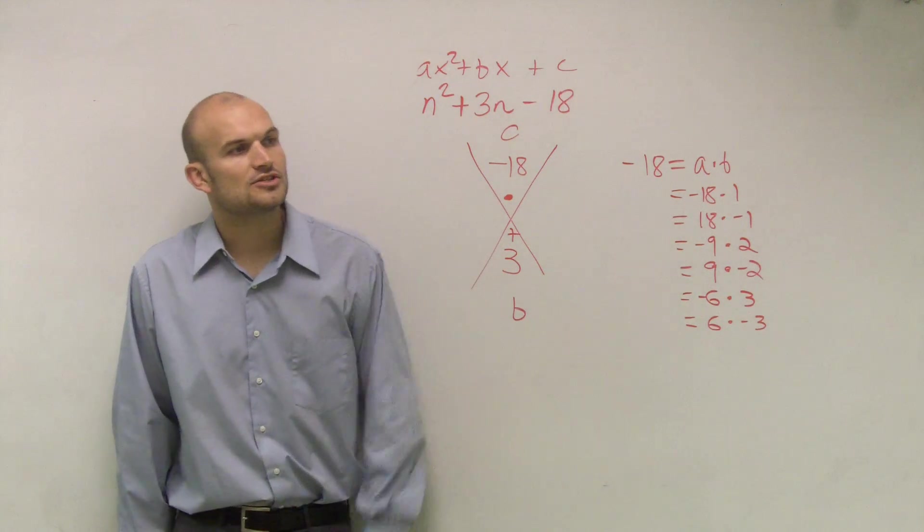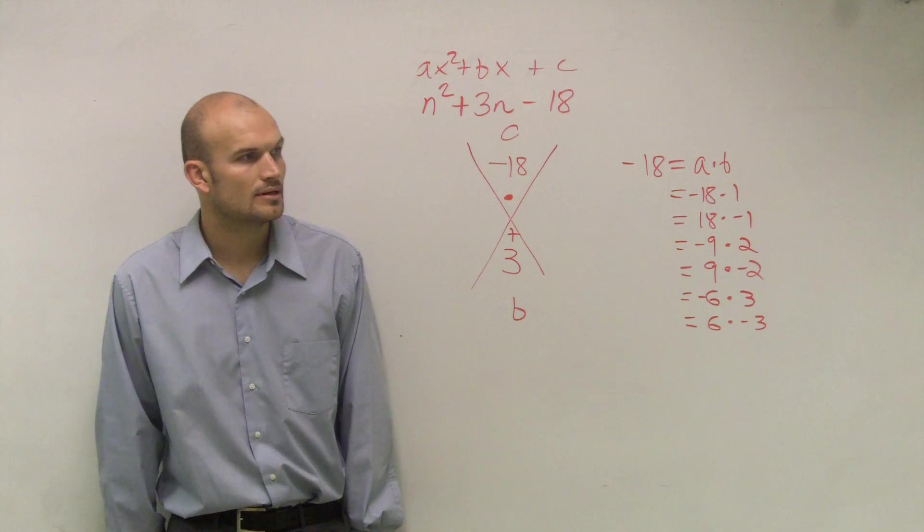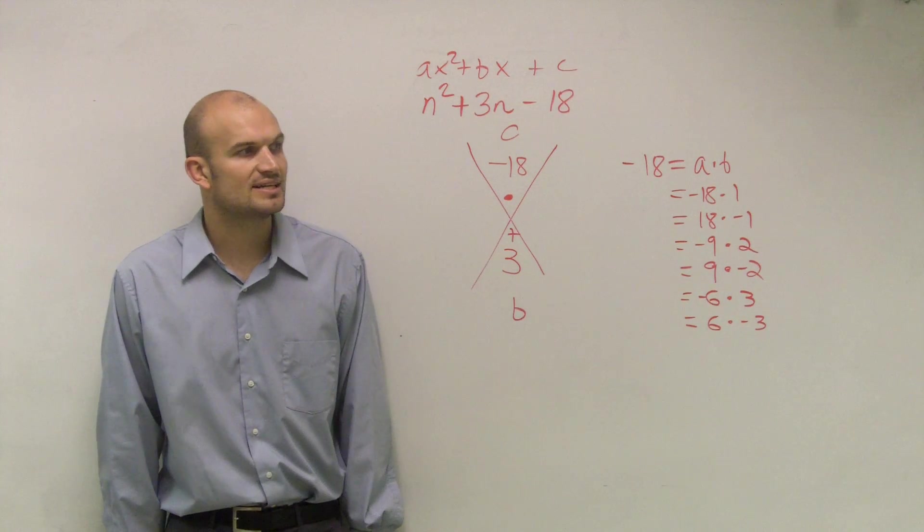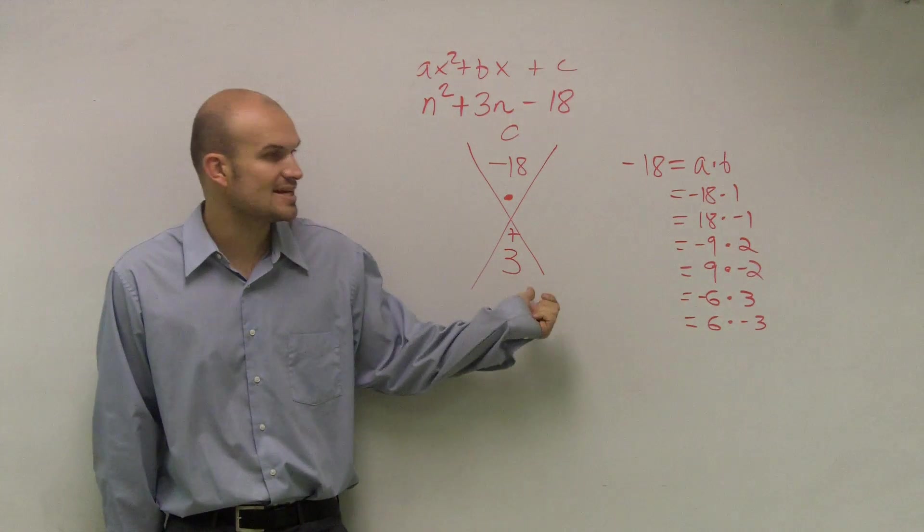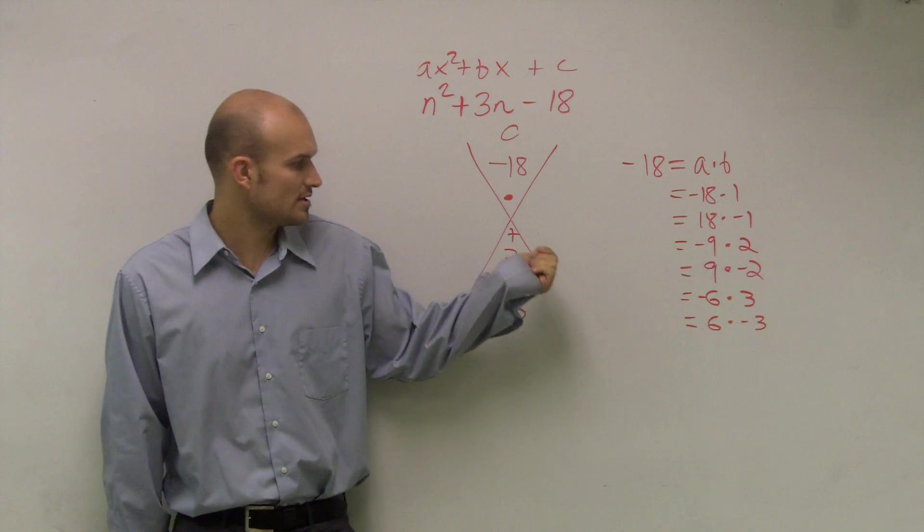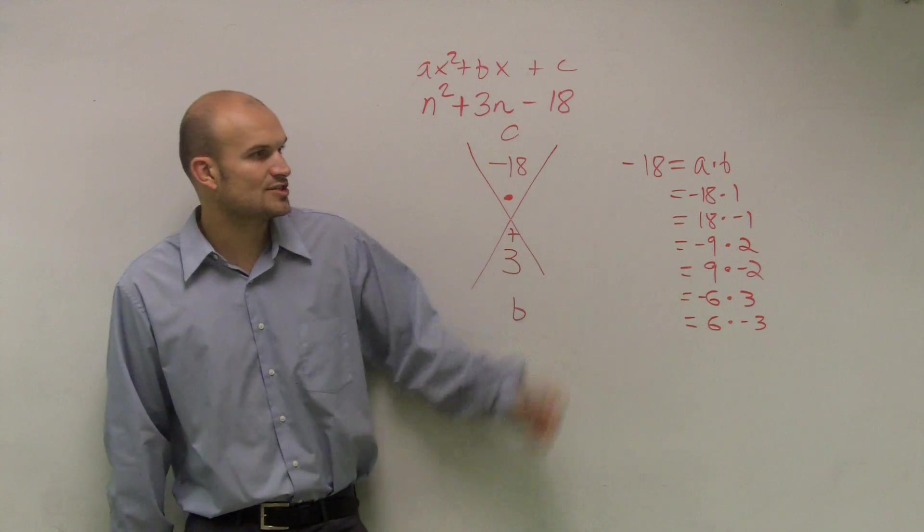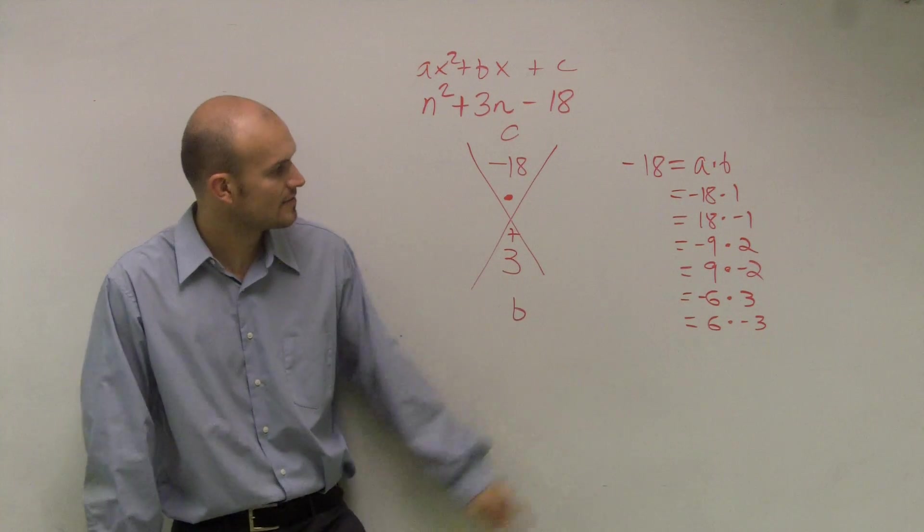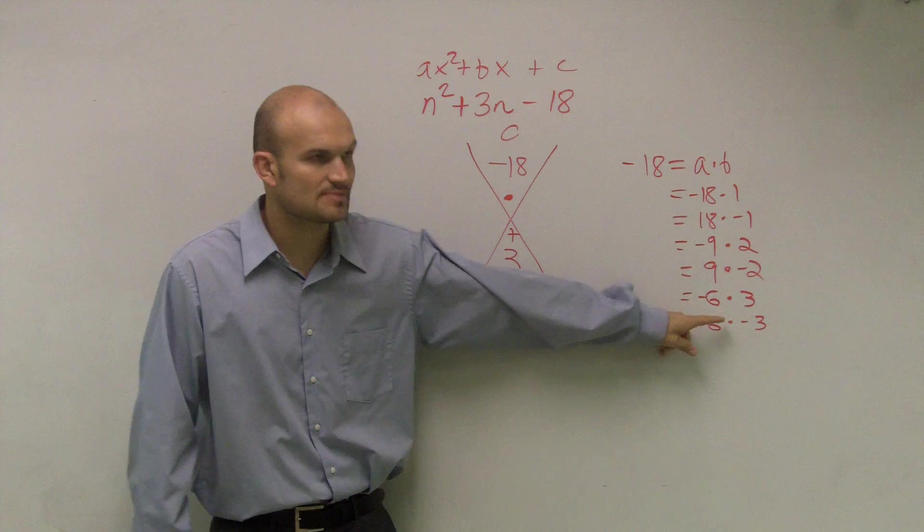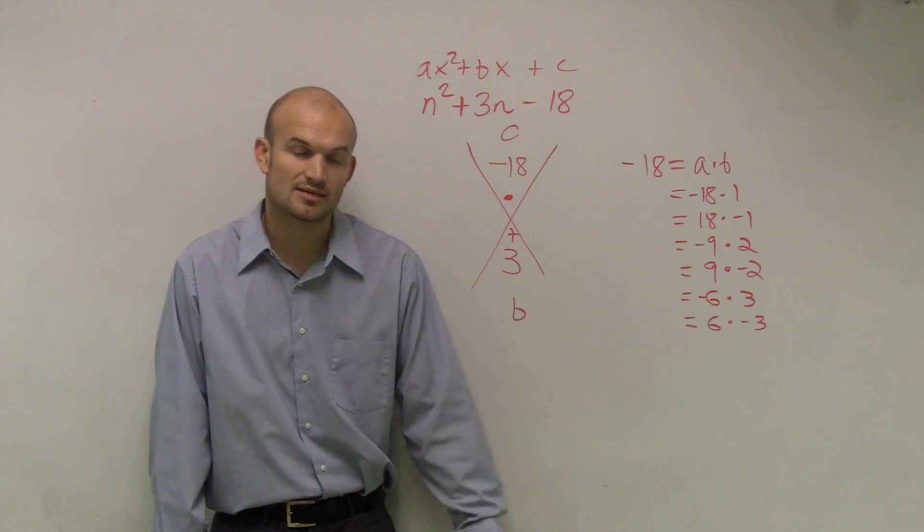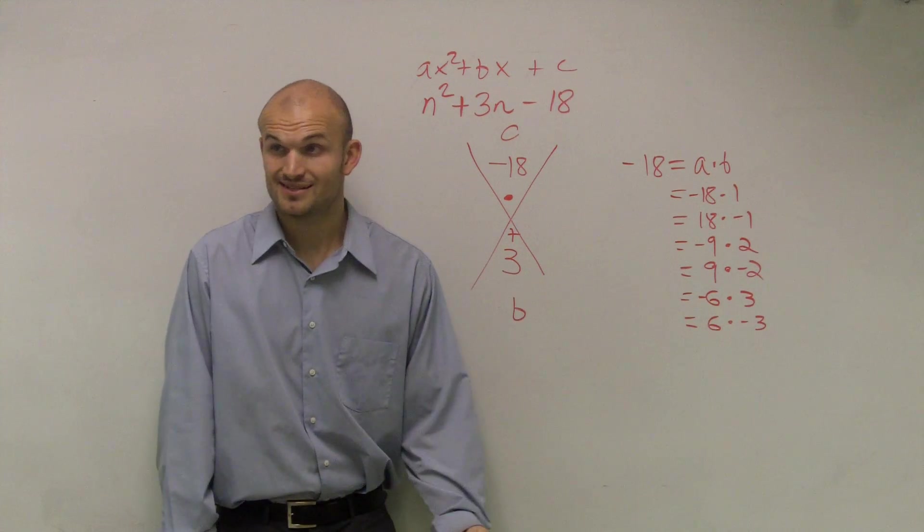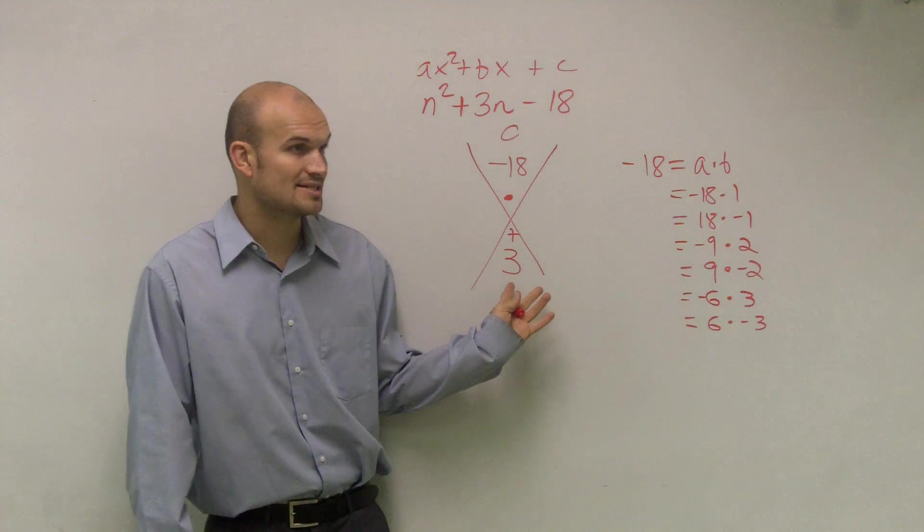Well, here's the trick, okay? To get them to see which one can give you a positive 3, remember, this has to be positive. So therefore, since my middle term is positive, the larger one of my two factors has to also be positive. Therefore, if you look at 6 plus negative 3, 6 plus negative 3 gives you a positive 3.